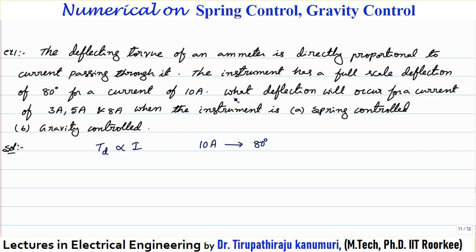It is asked: what deflection will occur for a current of 3 ampere, 5 ampere, and 8 ampere when the instrument is spring controlled and gravity controlled? When we are varying from 0 to 10 amperes, at positions of 3, 5, and 8 amperes, we need to calculate what the reading will be.